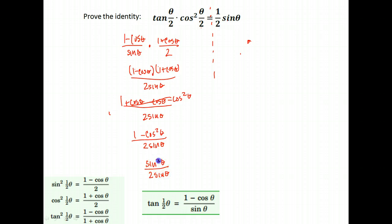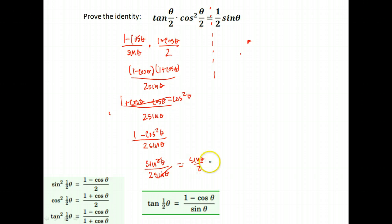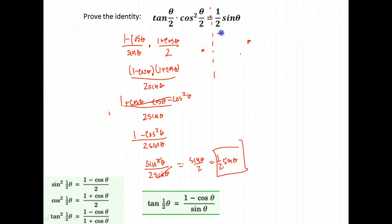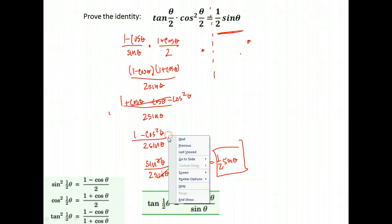So now I have sine squared theta on top and sine theta on the bottom. I can cancel one sine from both, giving me sine theta over 2, which is the same as one-half sine theta. We did show that the left-hand side was the same as the right-hand side, using a couple of identities along the way.